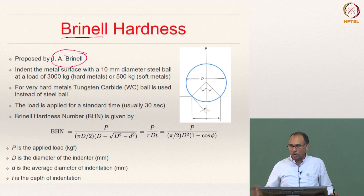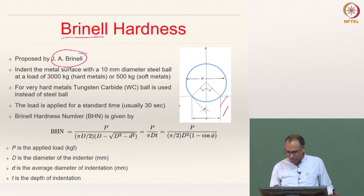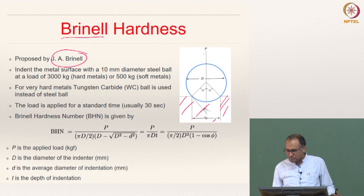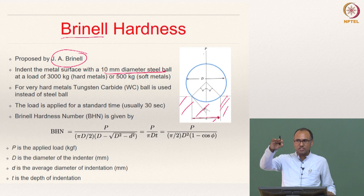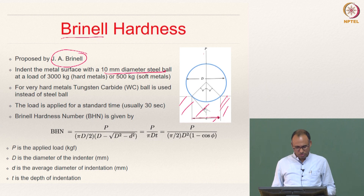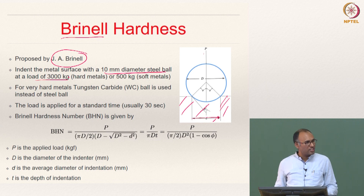The procedure is to indent the metal surface with a 10 mm diameter steel ball — this is the standard diameter for Brinell hardness. But if you want to change it, you can do so by following certain rules. If it is a hard metal, you apply a load of 3000 kg, and if it is a soft metal, you apply a load of 100 kg. You decide what load you want to apply.